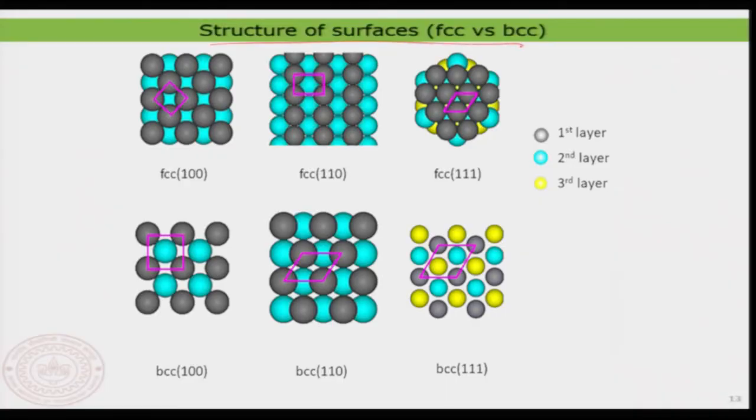We started by looking at the microscopic structure of the surface. This is extremely important because the structure of the surface decides everything — its reactivity, its properties, its electronic property, its chemical nature. We spent quite some time on the structure of surfaces, focusing mostly on FCC and BCC type crystals. You can now apply this understanding to other surfaces of your choice.